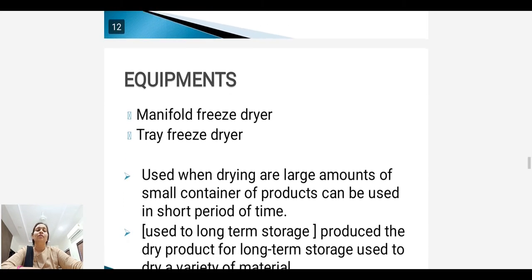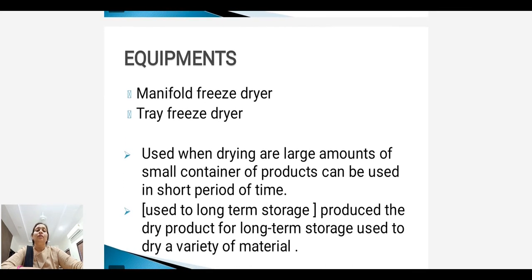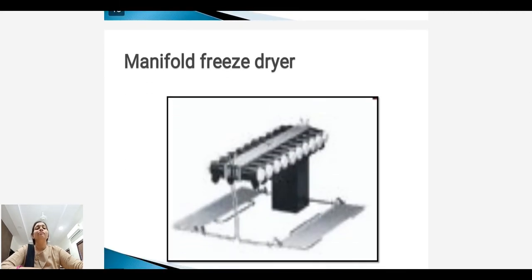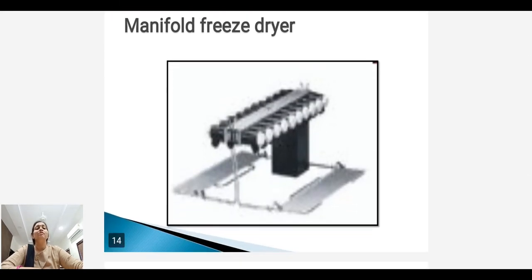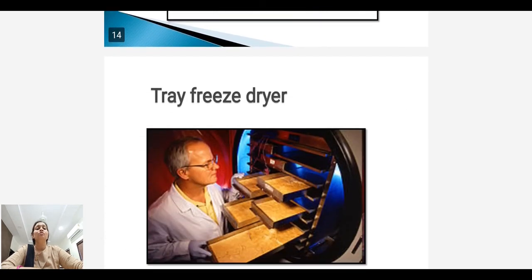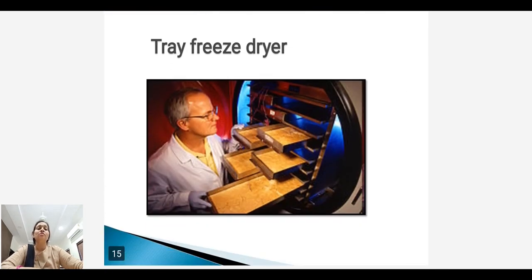Equipment. There are two types of equipment: first, manifold freeze dryer, and second, tray freeze dryer. This is the diagram of a manifold freeze dryer, and this is also a picture of a tray freeze dryer.